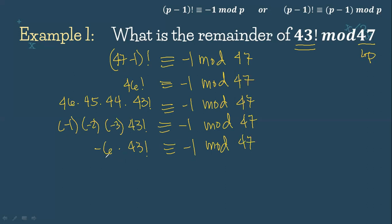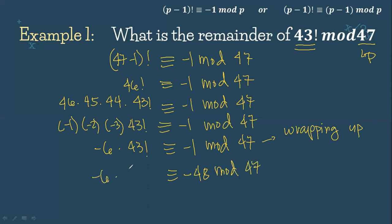Our goal here is to eliminate negative 6, since we want to find the value of 43! mod 47. Modulo is wrapping up, and we wrap up using either subtraction or addition. In this case, subtraction is more strategic. Negative 1 minus 47 is negative 48. Negative 6 and negative 48 are both divisible by negative 6, so they cancel. Dividing both sides by negative 6: negative 48 divided by negative 6 is 8. So the answer is 8 mod 47.